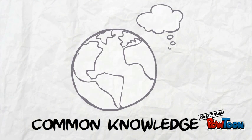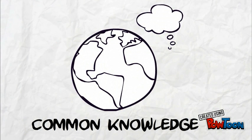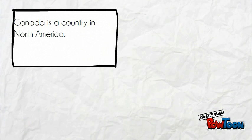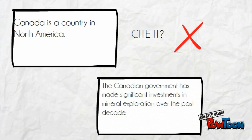When don't you have to cite? When something is considered common knowledge. For example, the statement 'Canada is a country in North America' would not need to have a citation attached. However, a statement such as 'The Canadian government has made significant investments in mineral exploration over the past decade' would definitely need to have a citation.